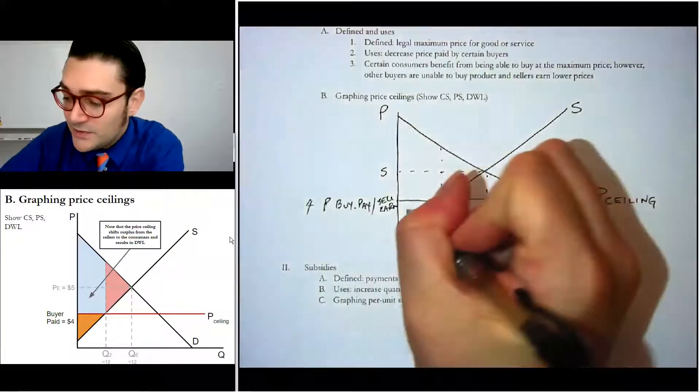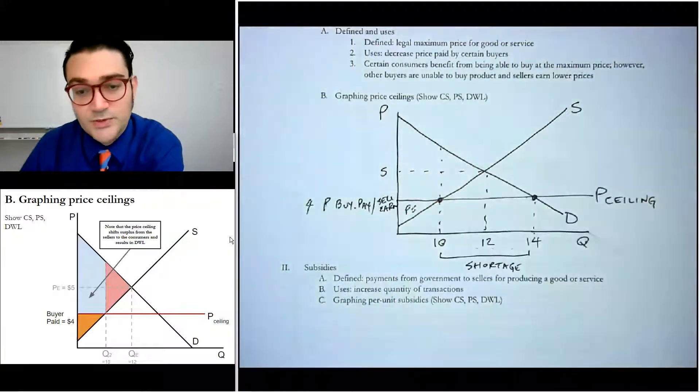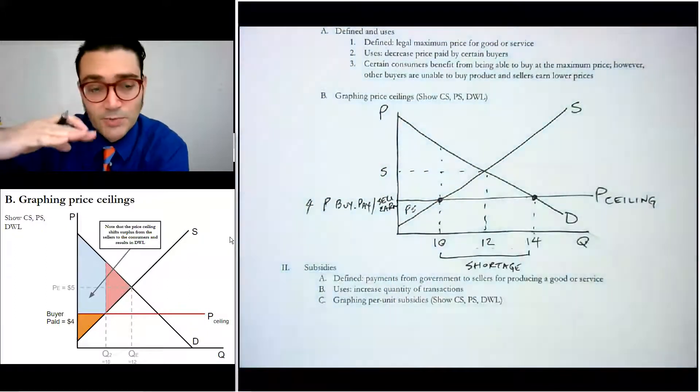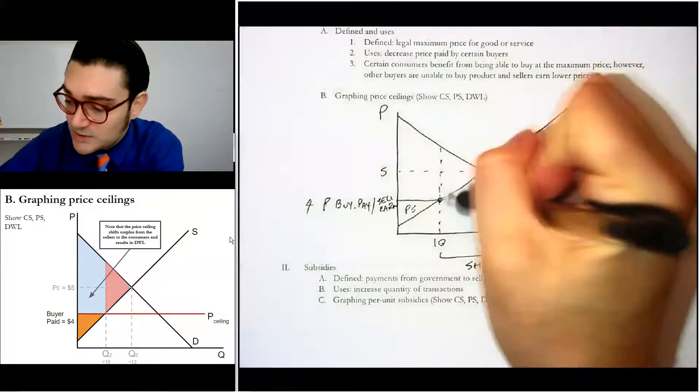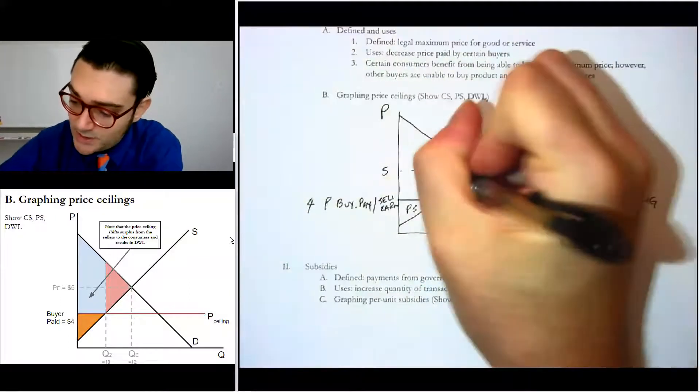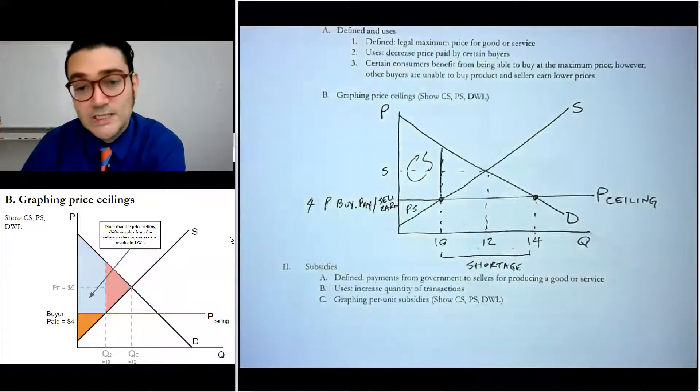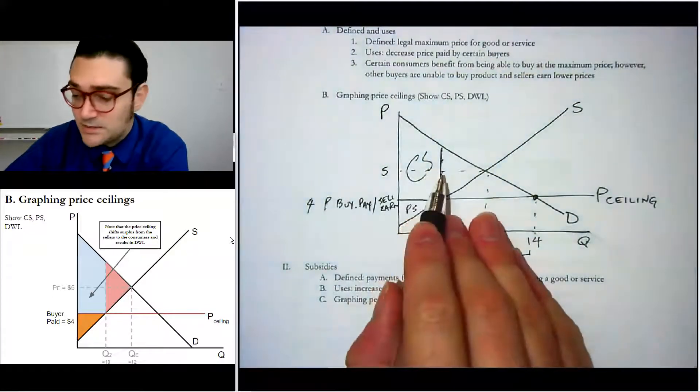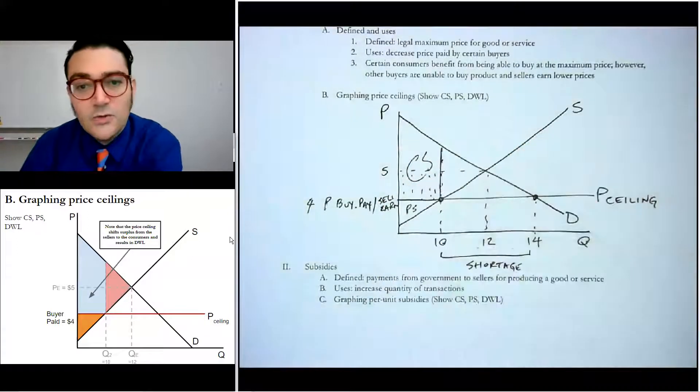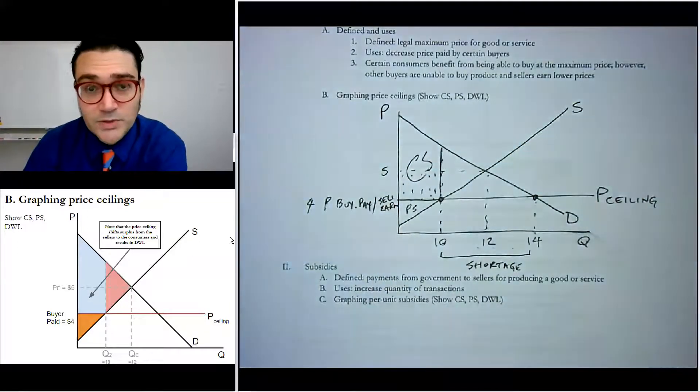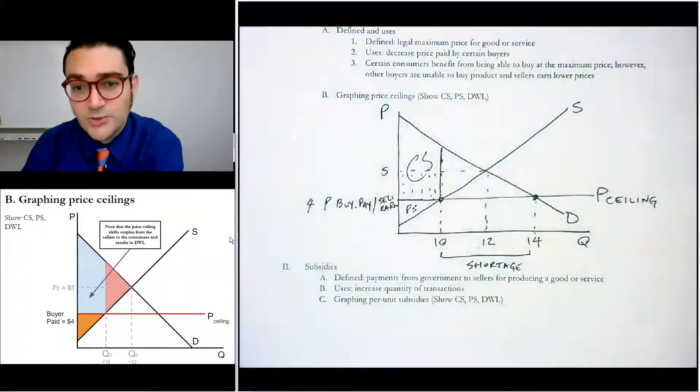And so this amount down here is now the producer surplus. It's very small because remember the price is now lower and it goes to the supply curve. The quantity that's being bought and sold is now 10. And so we'd say all of that is consumer surplus. And you can see that some amount, this amount in here, in this area, used to be part of producer surplus and got transformed into consumer surplus.